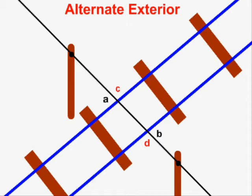Whenever we create a pair of alternate exterior angles like A and B, we are also creating another alternate exterior pair of angles like C and D.